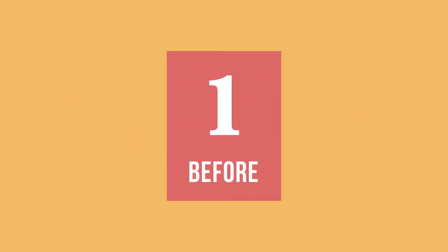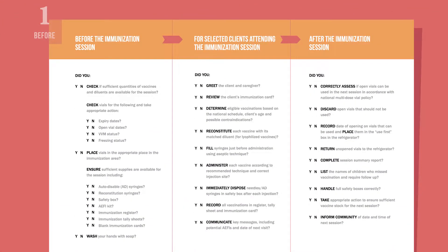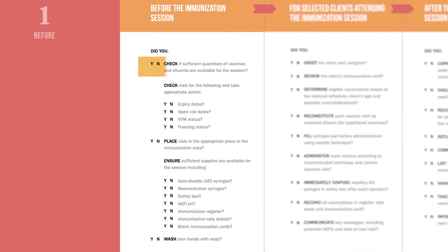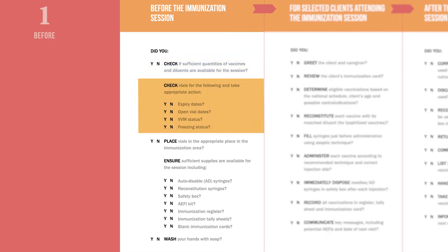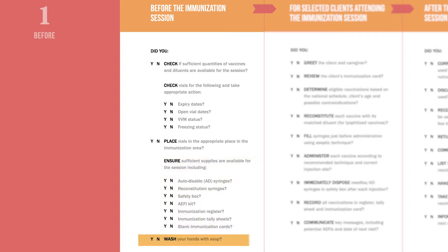Before a session, the checklist can help you make sure you have everything you need, beginning with the right quantity of vaccines and diluents. It also provides a list for checking the quality of the vaccines to make sure they are safe and effective, and to make sure vials are placed correctly in the immunization area. The checklist also helps you remember important supplies, from syringes and safety boxes to immunization cards. Finally, it is a good reminder to wash your hands before every session.